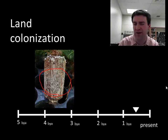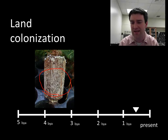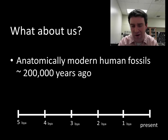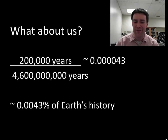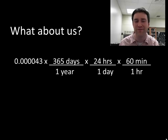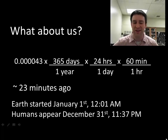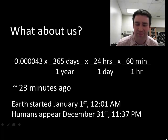Arthropod bugs and vertebrates dominate animal life on land currently, and the arthropods definitely went first — vertebrates came much later. As for humans, we find anatomically modern human fossils from about 200,000 years ago. On the scale of Earth's history, that's very close to present day — modern humans have only existed for about four thousandths of a percent of Earth's overall history. If you convert Earth's history into a calendar year, we would show up about 23 minutes ago — or if Earth started on January 1st, we'd appear on New Year's Eve about 20 minutes to midnight.